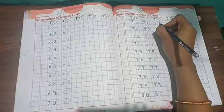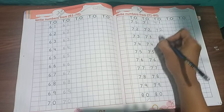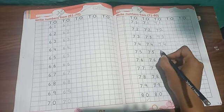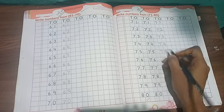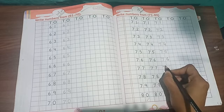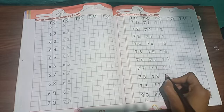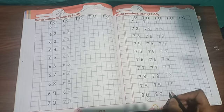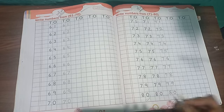Now write: 71, 72, 73, 74, 75, 76, 77, 78, 79, 80.